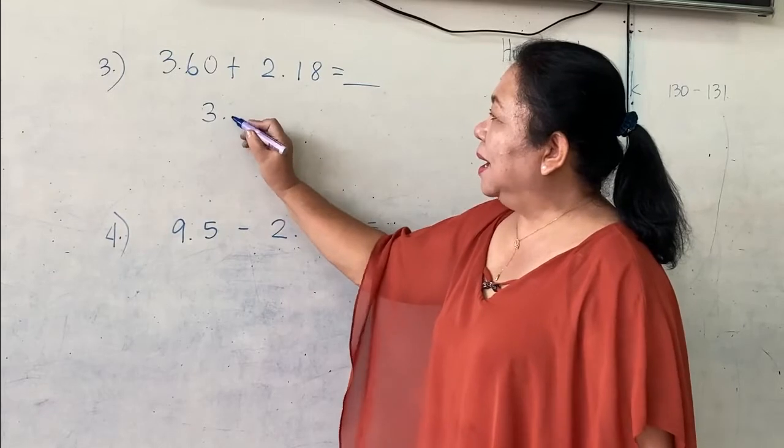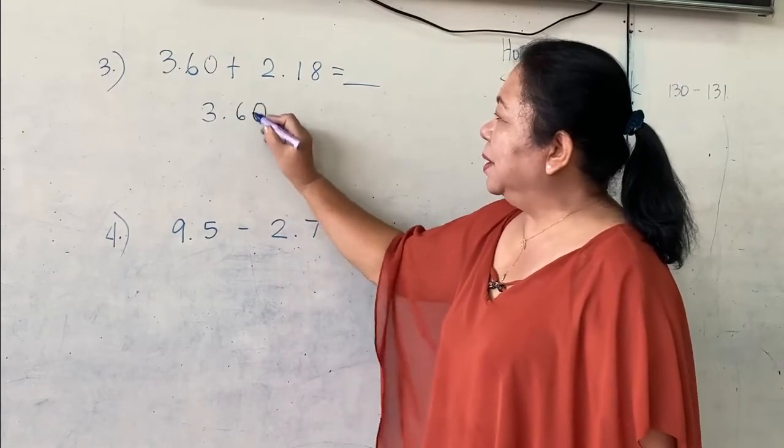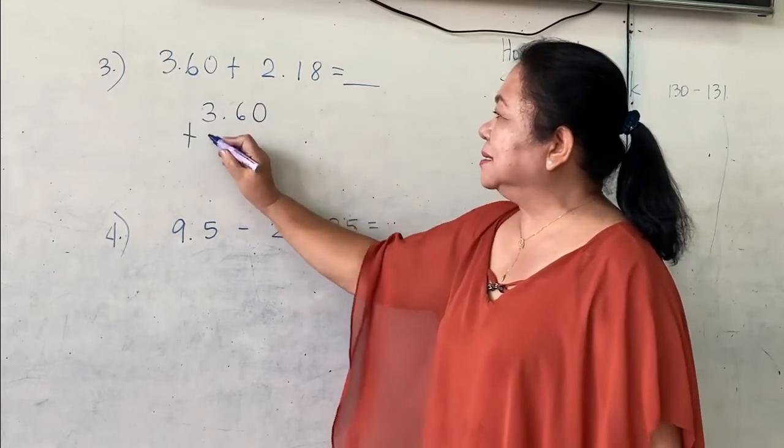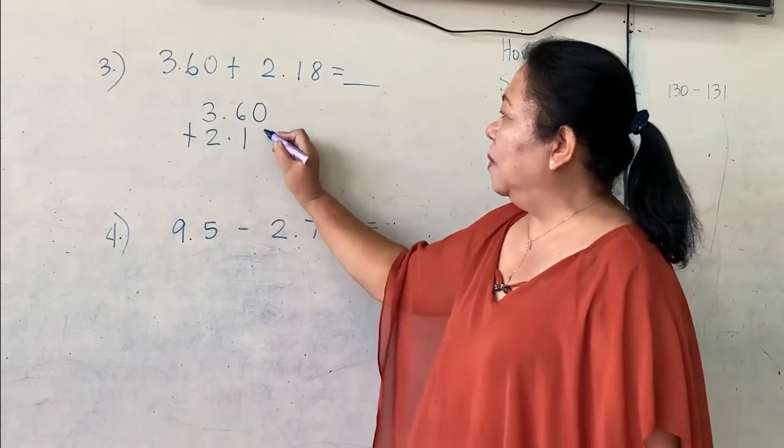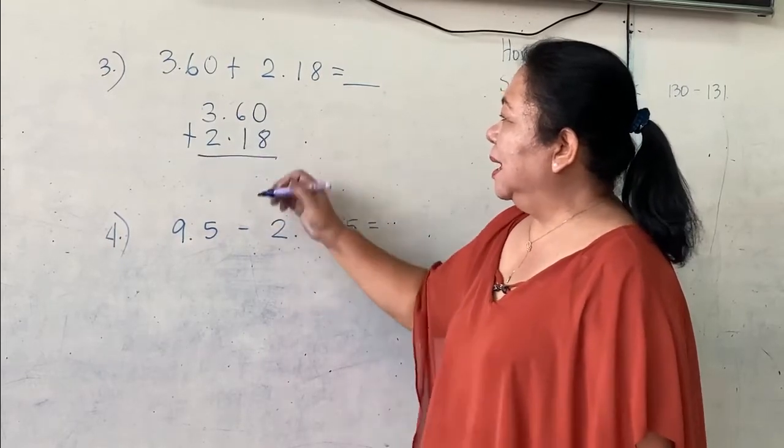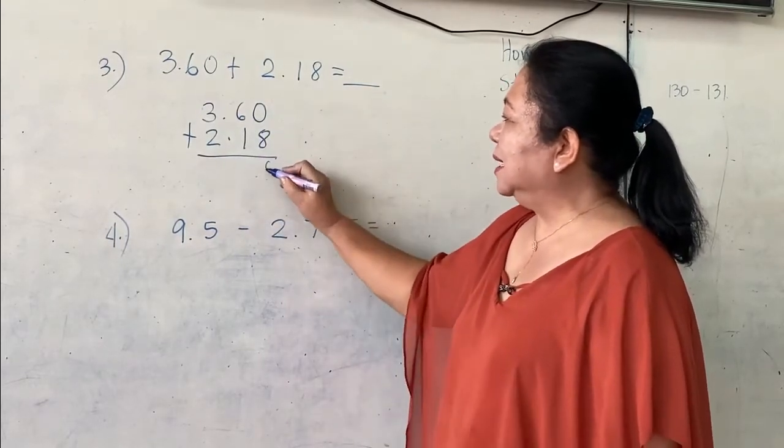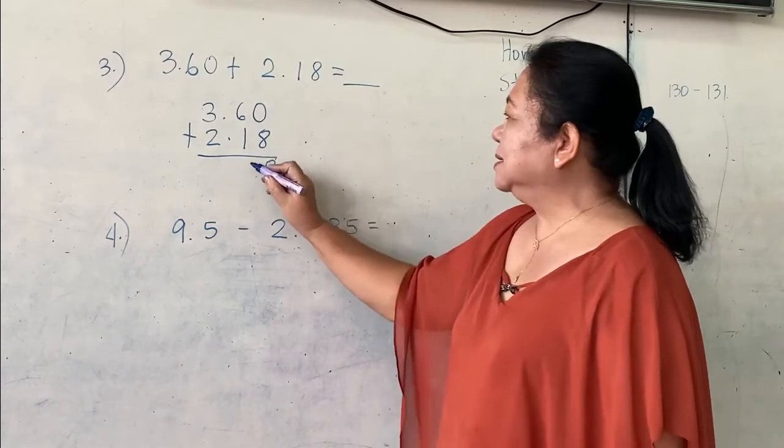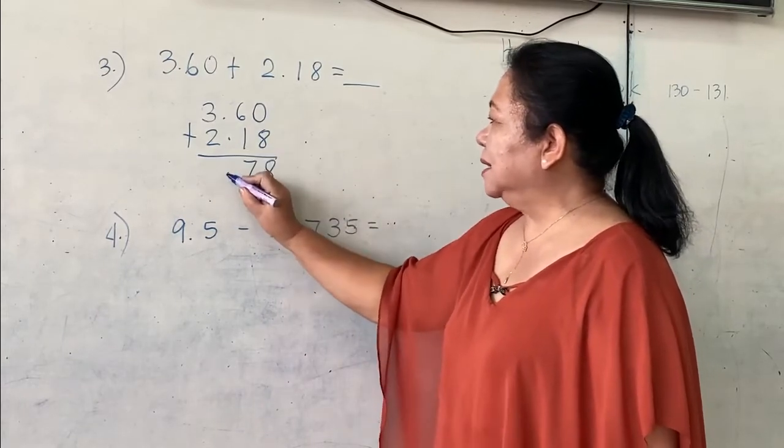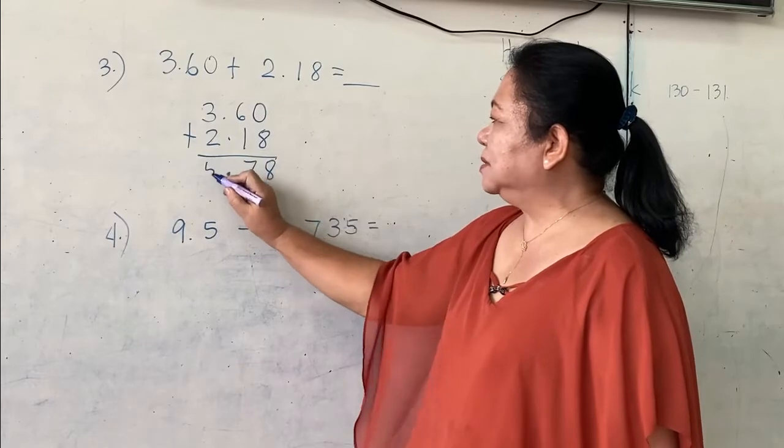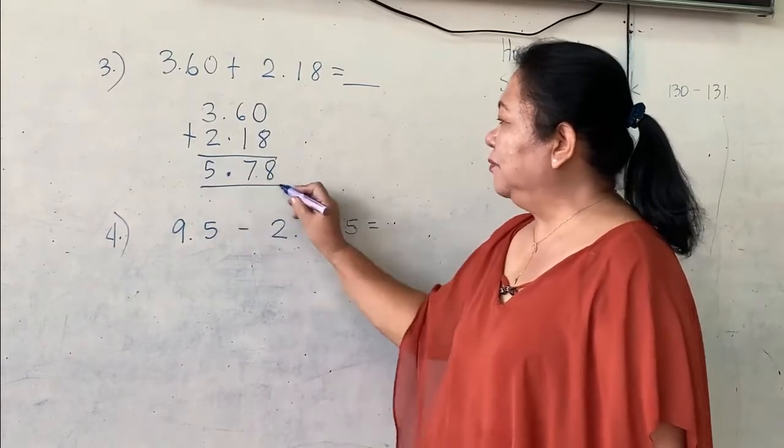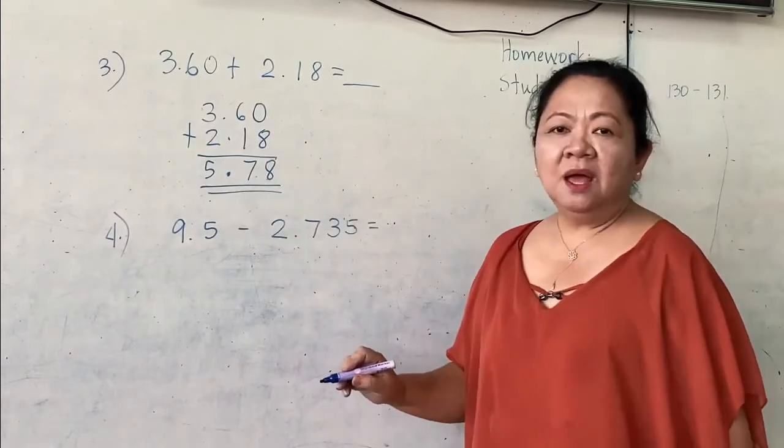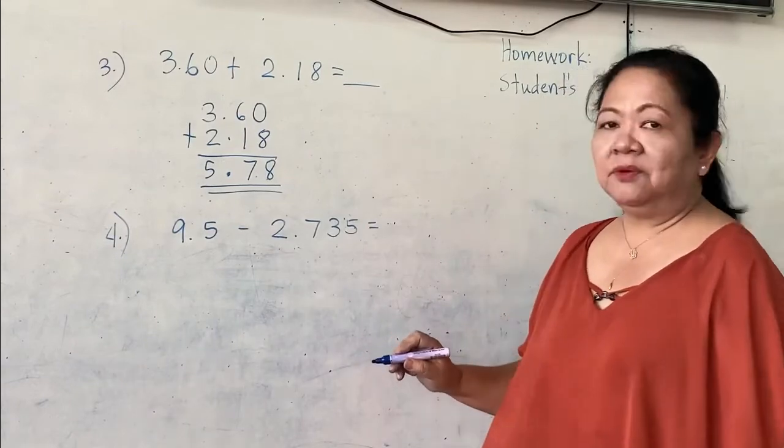So, here, you will write 3.60 plus 2.18. Then, you will add 0 plus 8 is 8. 6 plus 1 is 7. Write the point. And 3 plus 2 is 5. Therefore, the answer is 5.78.